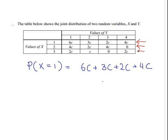The probability of x equal to 1 is 6c plus 3c plus 2c plus 4c, which equals 15c — that's our marginal total for the first row. Likewise, the next row gives 10c, and the last row gives 5c.